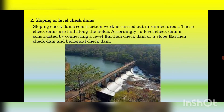Next, sloping or level check dams. Construction work for sloping check dams is carried out in rain-fed areas; these check dams are laid along the field. A level check dam is constructed by connecting a level earthen check dam, a slope earthen check dam, and a biological check dam — so three dams are connected. These are not just for storing water but also for slowing the movement of water. Sloping dams are used to reduce soil erosion and to trap groundwater.